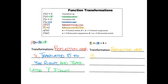After that, we have a subtraction inside of the parentheses — subtraction only for x. Subtracting only inside of the parentheses gives a translation to the right, specifically three to the right. And at last, our last transformation is an addition to the whole function — adding to the whole function is a translation up, so the last thing is translated four up.